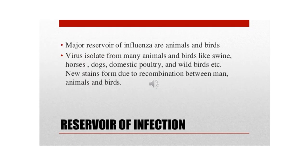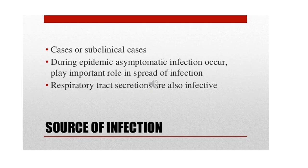The major reservoir of infection is animals and birds. The virus has been isolated from many animals and birds such as swine, horses, dogs, domestic poultry, and wild birds. New strains form due to recombination between man, animals, and birds. The source of infection is cases or subclinical cases. During an epidemic, asymptomatic infections occur and play an important role in the spread of infection. Respiratory tract infections are also infective.